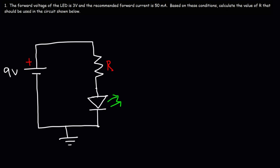In this video, we're going to talk about how to calculate the resistor value in an LED circuit. We're given the forward voltage of the LED, which is 3 volts, and the recommended forward current is 50 milliamps. Based on these conditions, what is the value of R that should be used in this circuit?